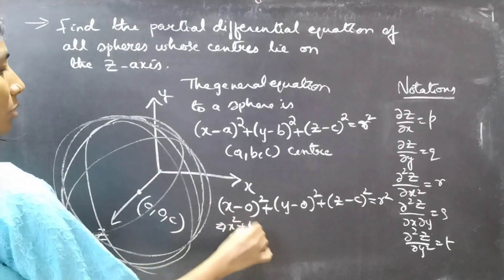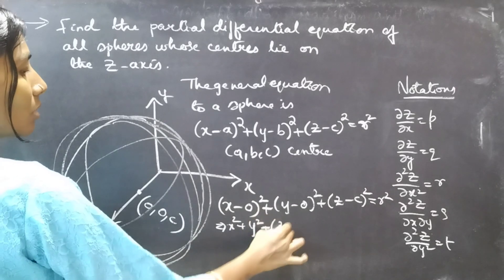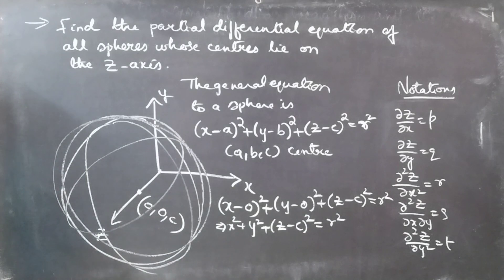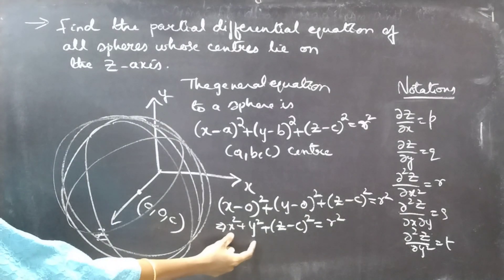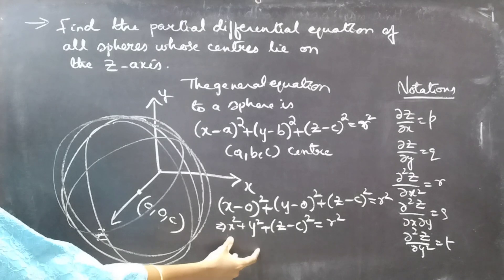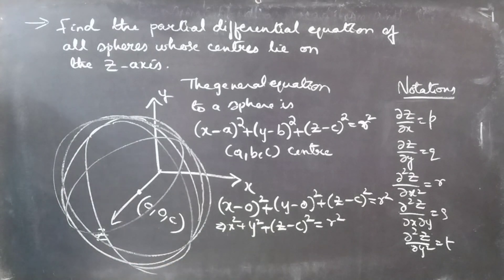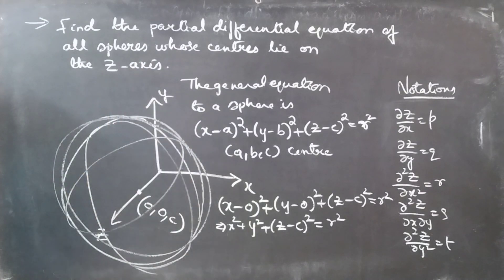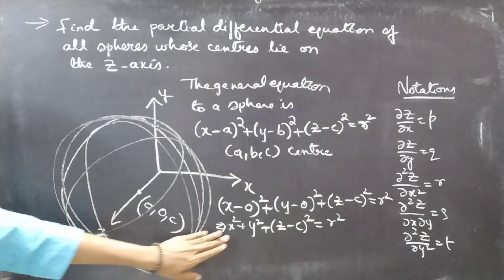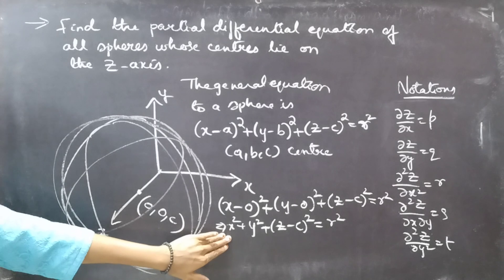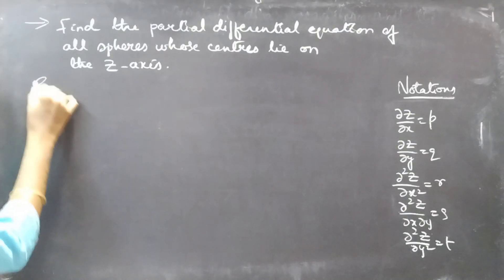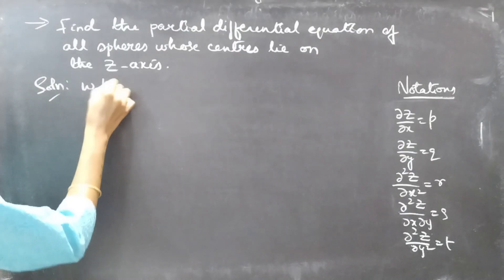Substituting, this gives us x² + y² + (z − c)² = r². This represents the general equation of all spheres whose center lies on the z-axis — we can consider this as the general equation for the entire family of such spheres.